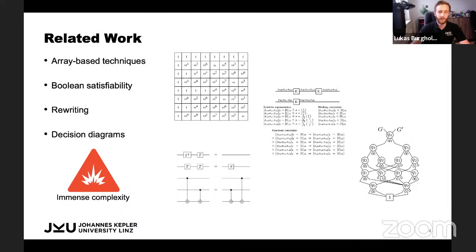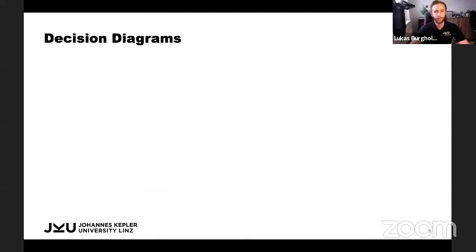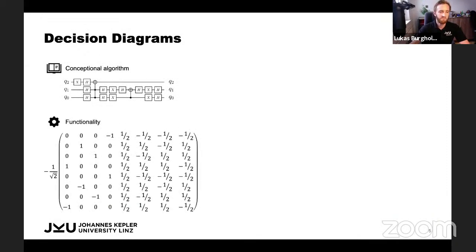For the next couple of minutes, I'm going to focus on decision diagrams in particular. And since many of you might not be that familiar with this type of functional representation for quantum circuits, let's take a deeper look at how decision diagrams work. If we consider the circuit from before, the Grover's instance, its unitary matrix looks like this. If you want to represent this matrix as a decision diagram, we will proceed as follows.